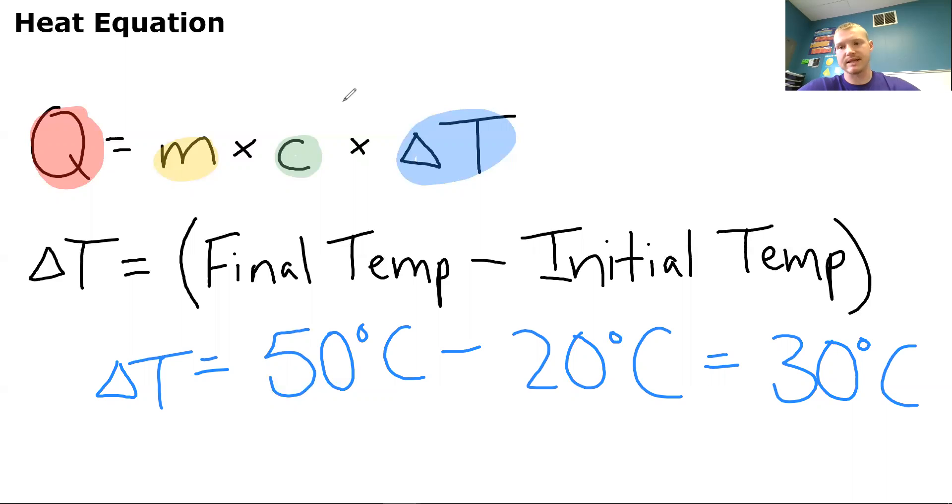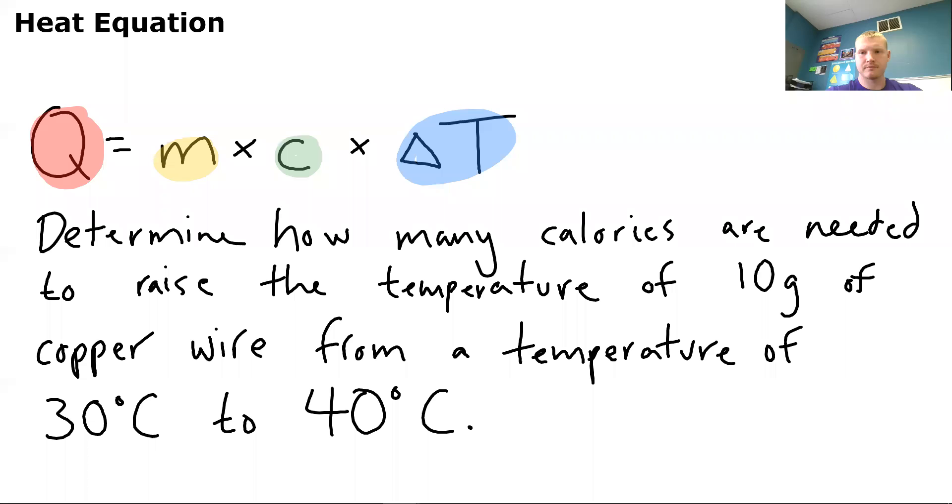And then if our mass was, let's say 0.1, then you would be able to solve for your Q. So let's try out an example or two here. So using this equation here. So Q equals M times C times delta T. So our heat equals our mass times our specific heat capacity times our change in temperature.